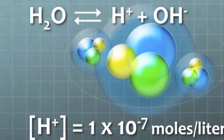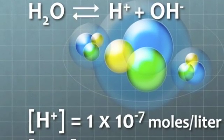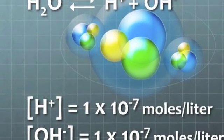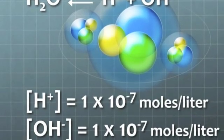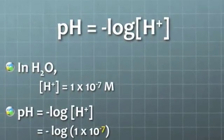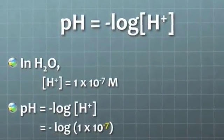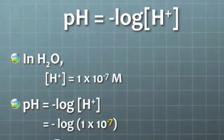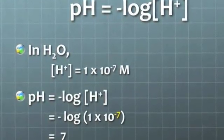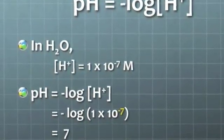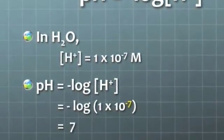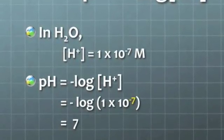A liter of water contains about 1 times 10 to the minus 7th moles of H-plus, and the same amount of OH-. The pH of water is found by taking the negative logarithm of the molar concentration of H-plus. So in water, the concentration of H-plus is 1 times 10 to the negative 7th molars, and the pH would be 7, because that's the negative logarithm of 1 times 10 to the minus 7th.